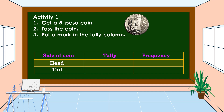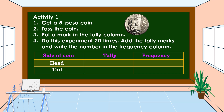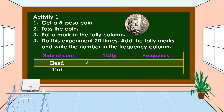Let's do an experiment. Get a five-peso coin and toss the coin. Put a mark in the tally column. Do this experiment 20 times. Add the tally marks and write the number in the frequency column. Okay, watch and observe.